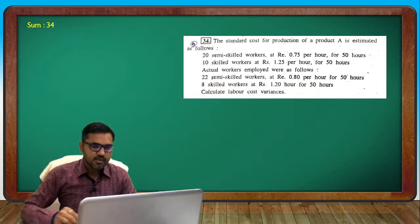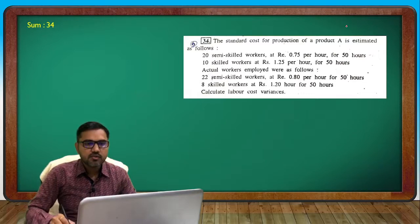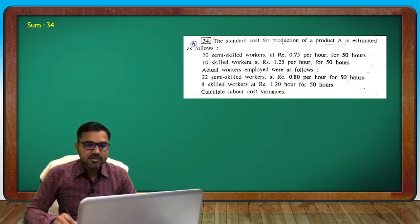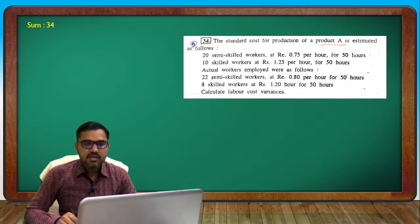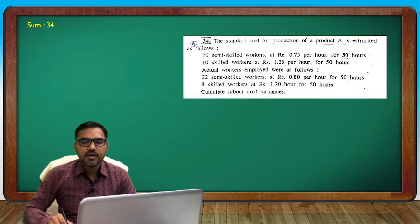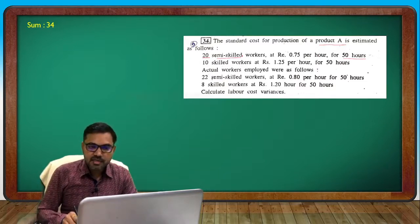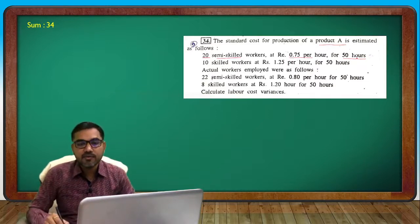The standard cost for production of Product A is estimated as follows. Product A is made by the standard cost: 20 semi-skilled workers at 0.75 per hour for 50 hours. Number of workers is 20, semi-skilled, per hour rate is 0.75, for 50 hours.